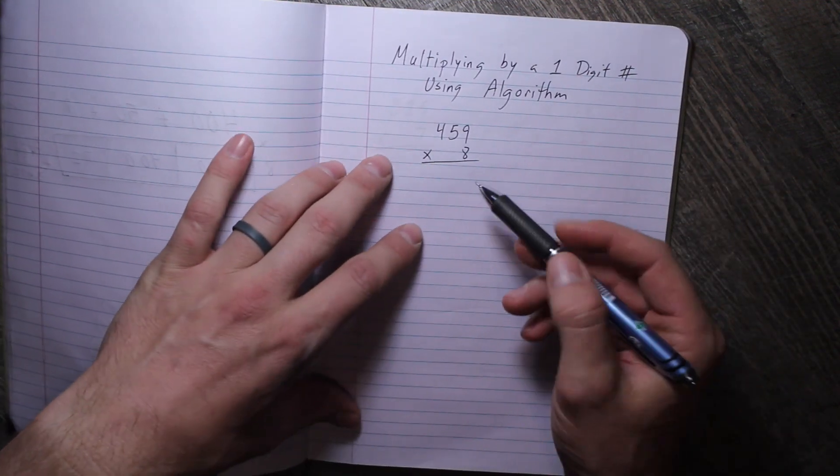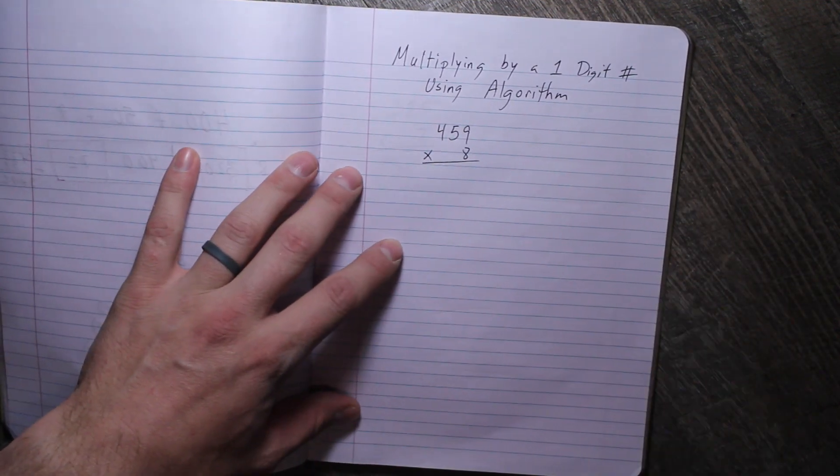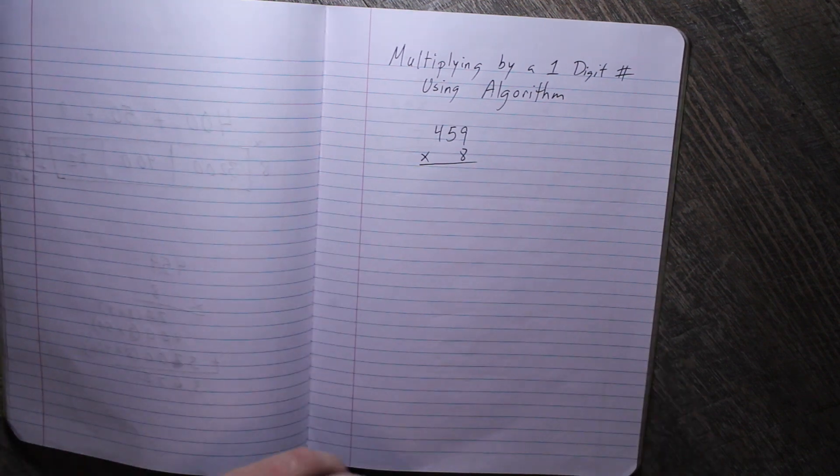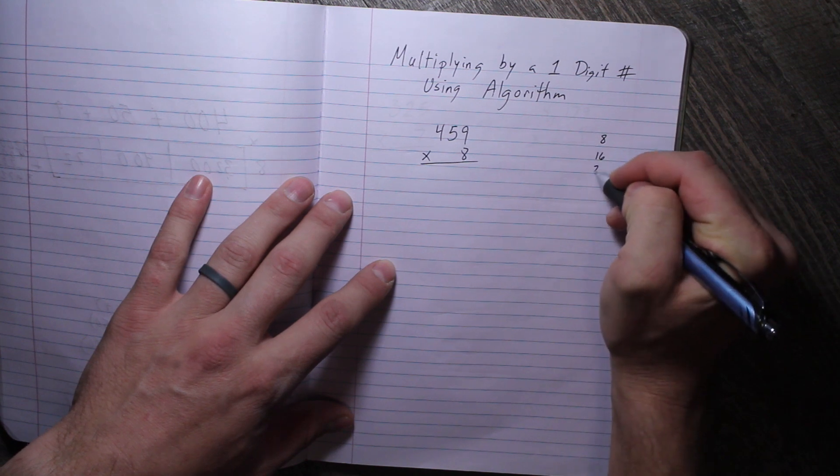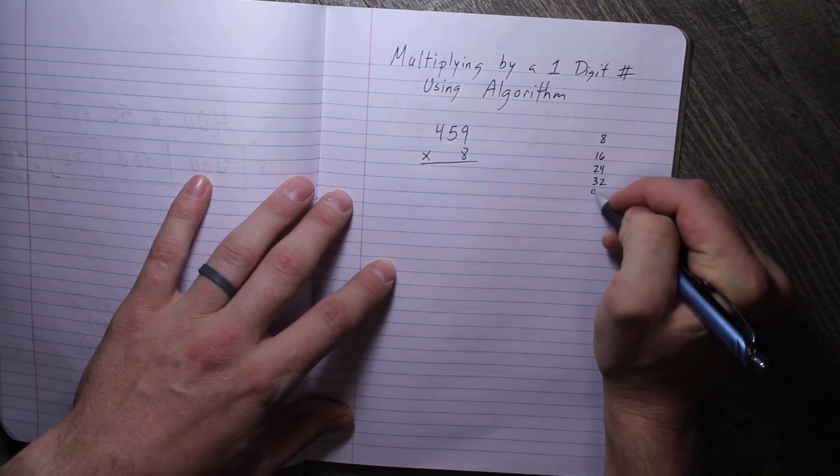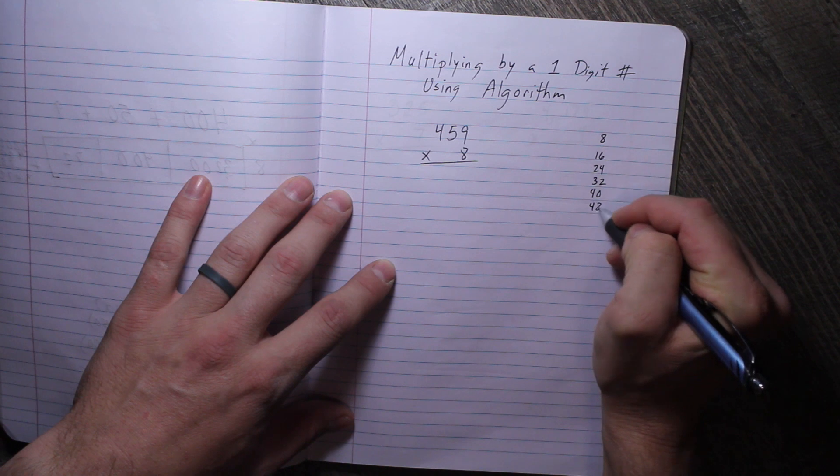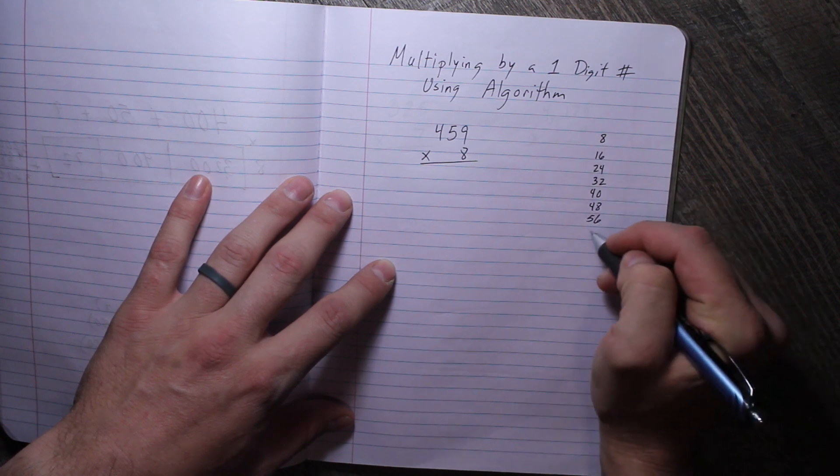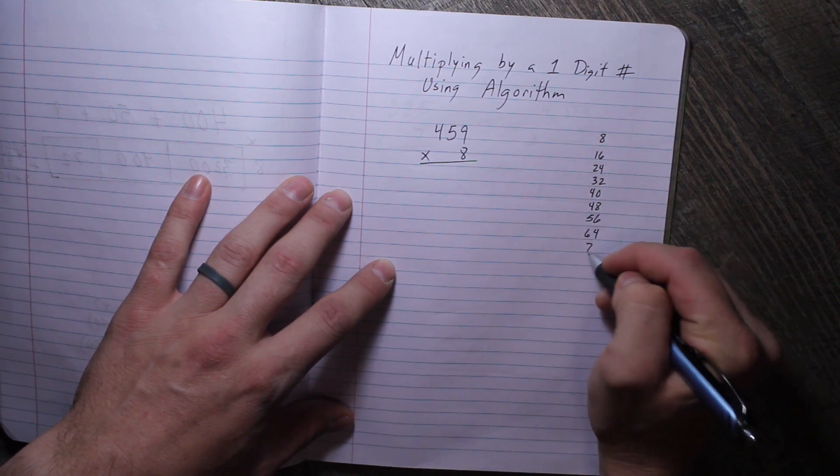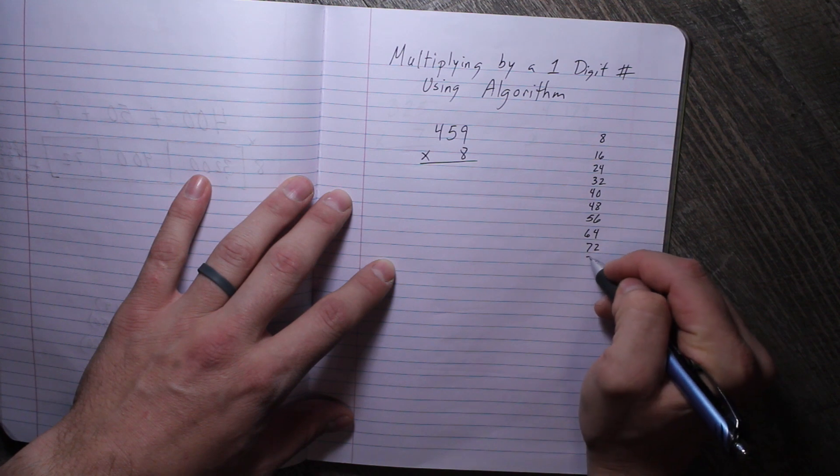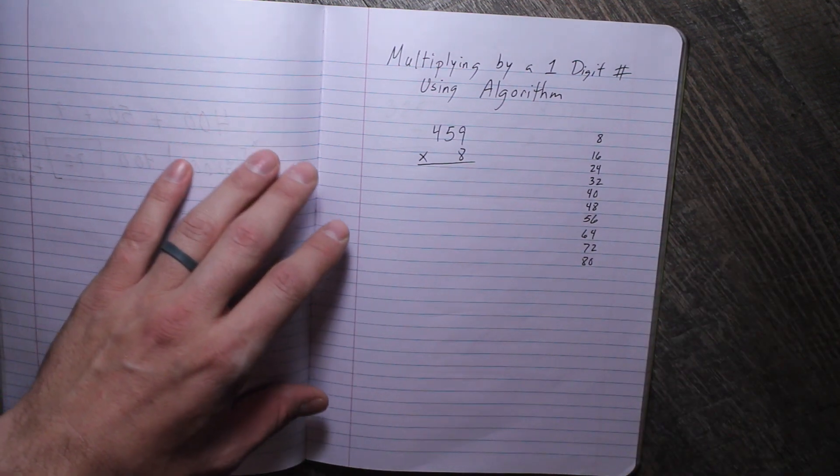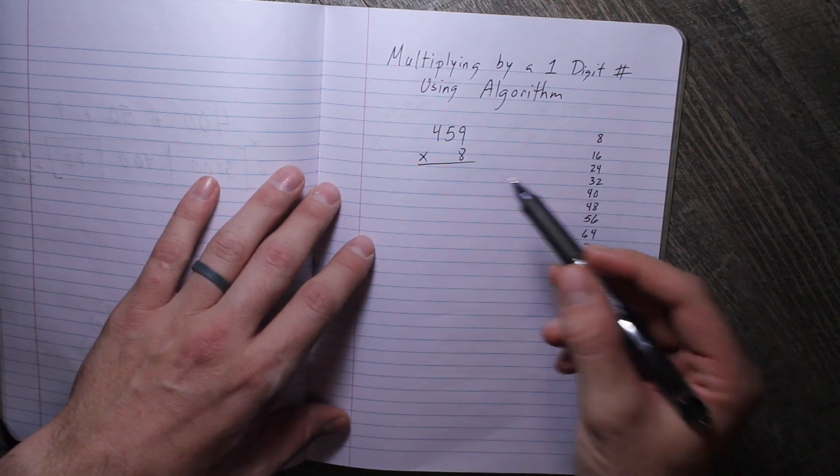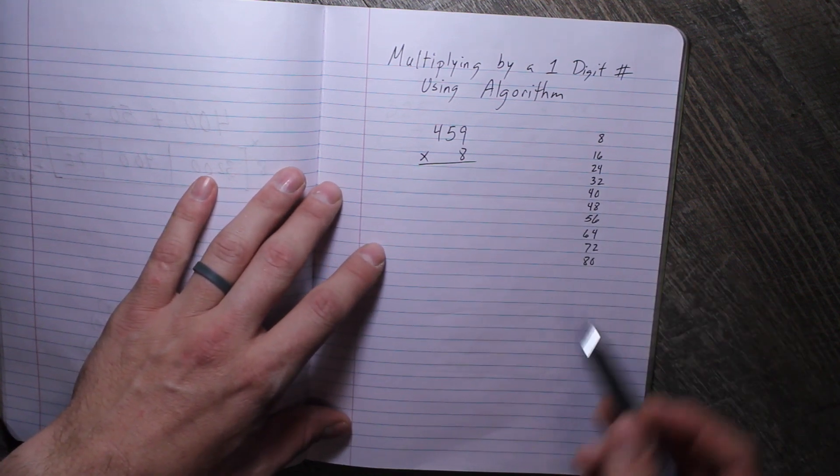So let's get into it. 459 times 8. Now if you aren't familiar with your multiples of 8, you can always write them to the side: 8, 16, 24, 32, 40, 48, 56, 64, 72, and 80. That always helps me so I can remember them.